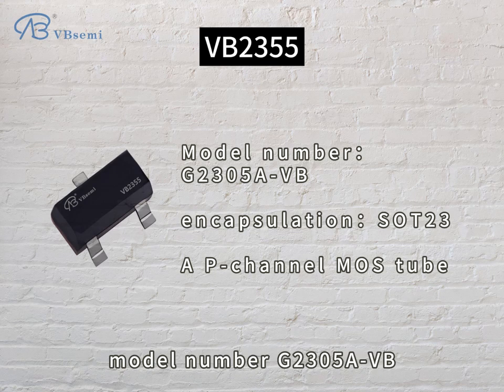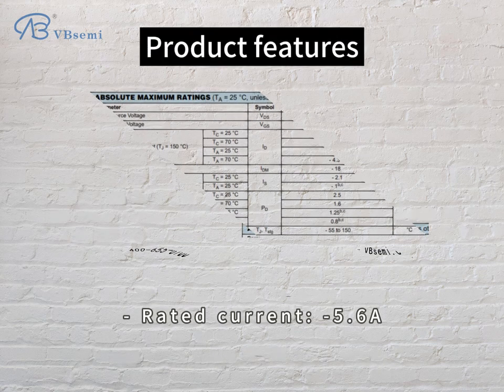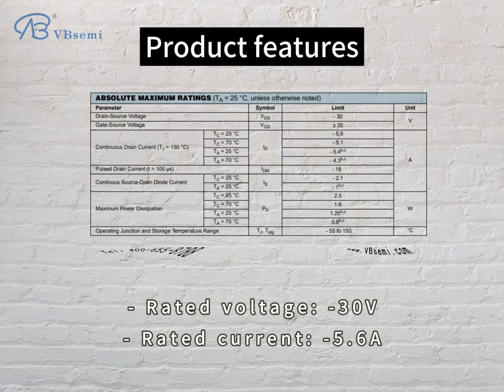Model number: G2305AVB. Product features — Rated voltage: -30V, Rated current: 5.6A.